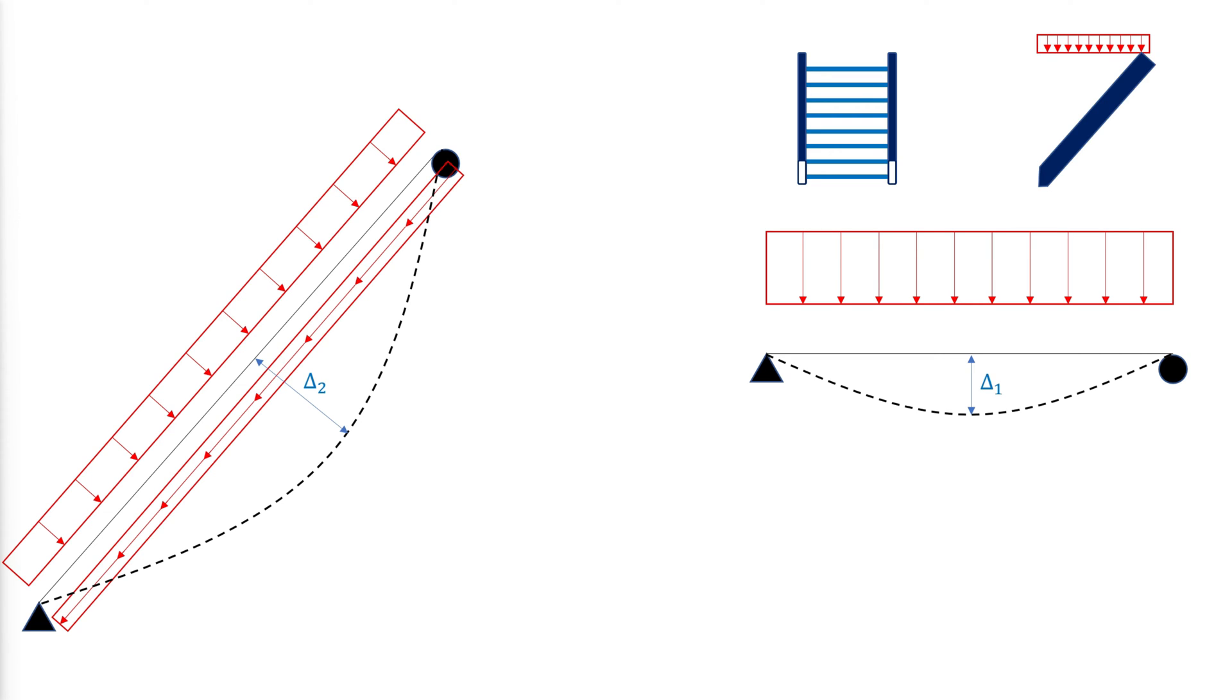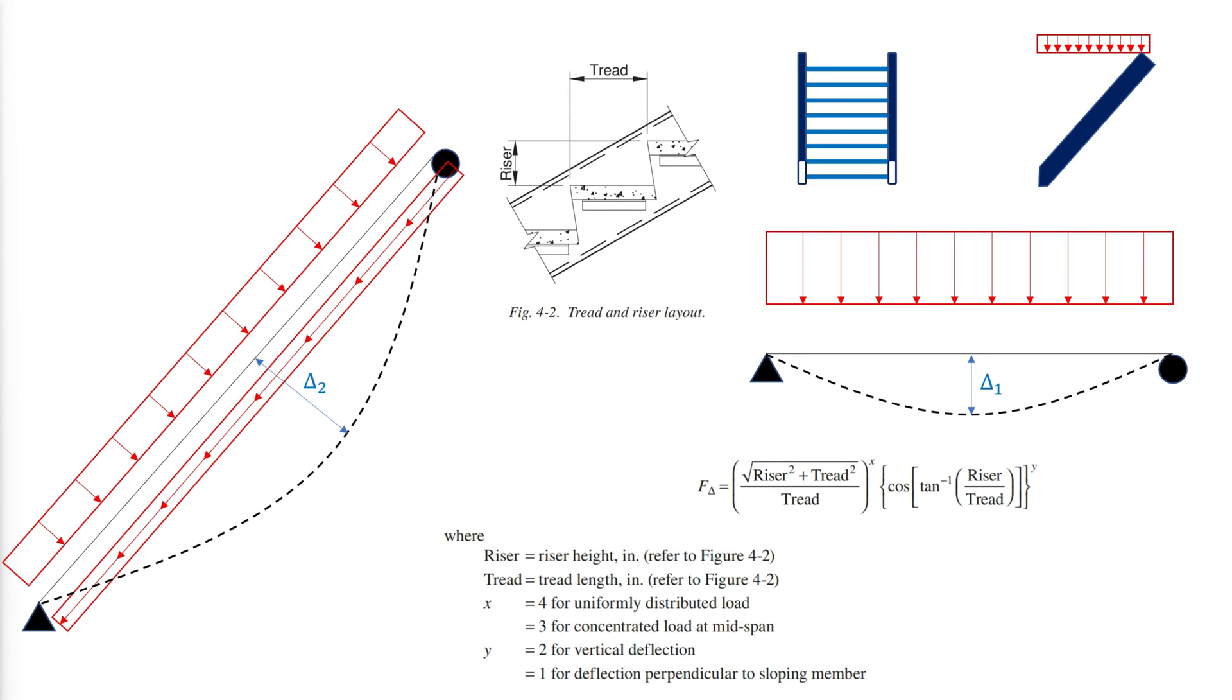If using the horizontal plane method for design, the equation provided below can be used to determine approximate deflections by utilizing an additional deflection factor, F-delta.